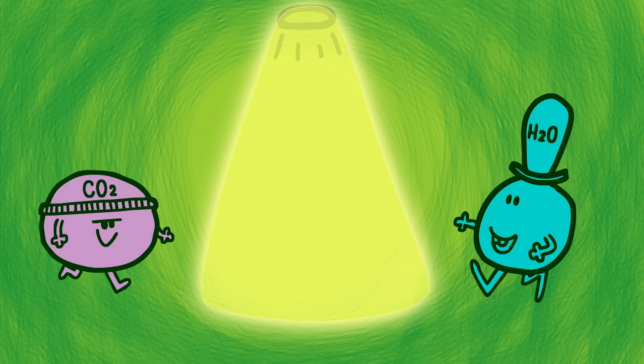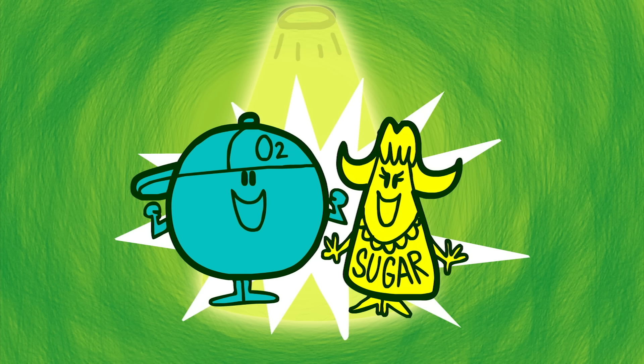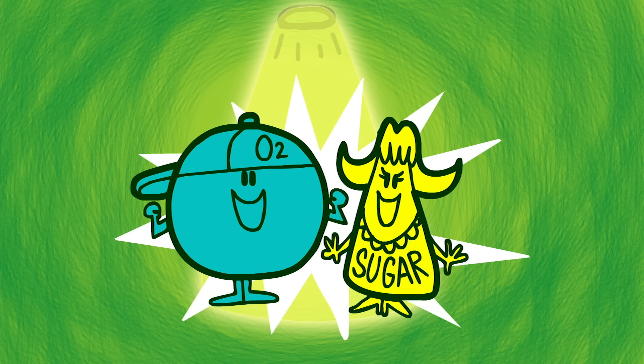Plant cells make energy a different way. They have chloroplasts that combine carbon dioxide and water with light energy from the sun to create oxygen and sugar, a form of chemical energy.